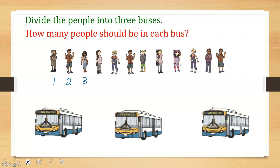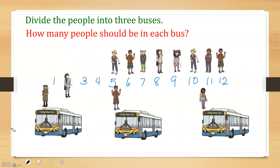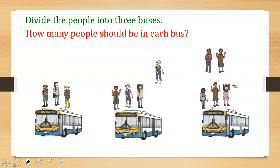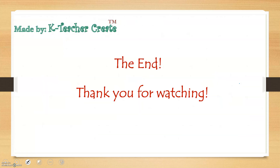One, two, three, four, five, six, seven, eight, nine, ten, eleven, twelve people. Now let's count how many people should be in each bus: one, two, three, four — one, two, three, four — one, two, three, four. There are four people in each bus. That's it, thank you for watching!